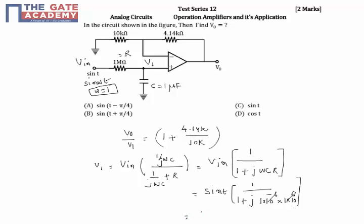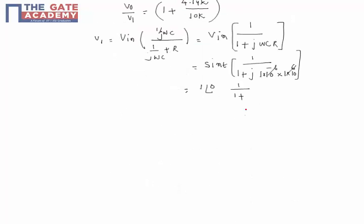I can take this from a magnitude point of view: 1 at an angle of 0, and this will be 1 by 1 plus j. Its magnitude is root 2, at an angle of 45 degrees. So this equals 1 by root 2 at an angle of minus 45 degrees.